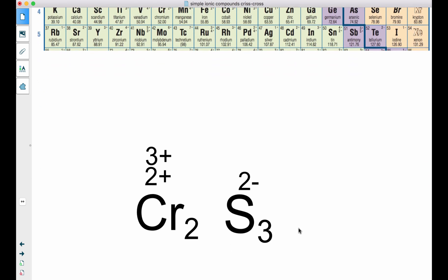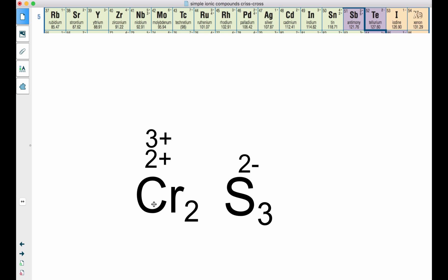So again, we'll write it out. I've got chromium. Now, each chromium could either be a 2+ or a 3+, but I have two of them. So we'll get back to that in a second. Here's sulfur. Each sulfur is a 2-. But I've got three of them, which means the overall charge is going to be 6-.